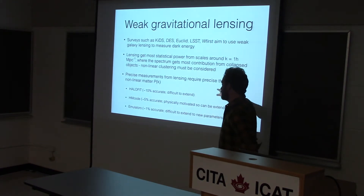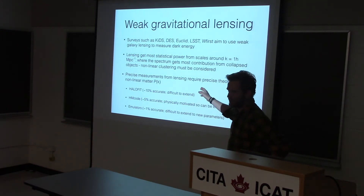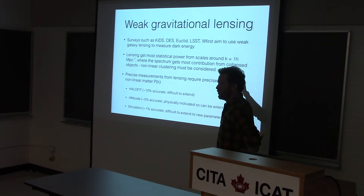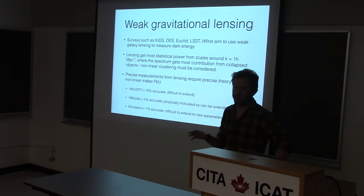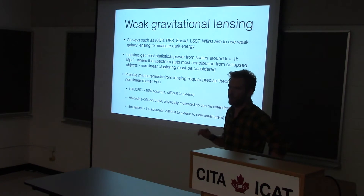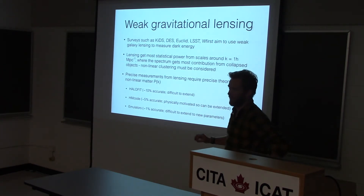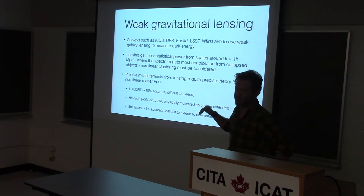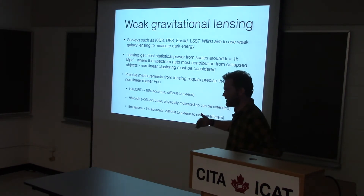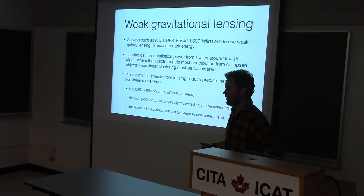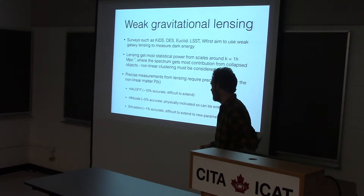Precise measurements from lensing — people talk about measuring the dark energy equation of state to 1% — require you to know your theory equally precisely. So you need to know the nonlinear matter power spectrum for any different dark energy model you hope weak lensing can tell you about, to 1% accuracy. The number for Euclid that gets thrown around is that you need 1% accuracy to K of 5 in order to interpret Euclid correctly.